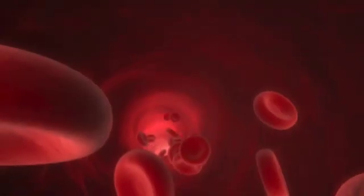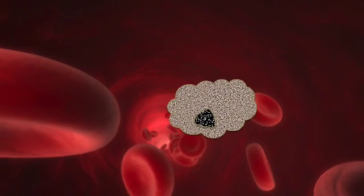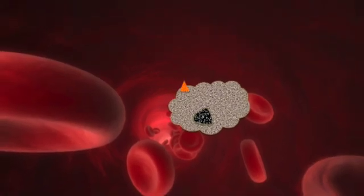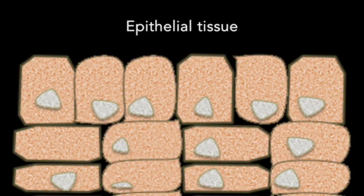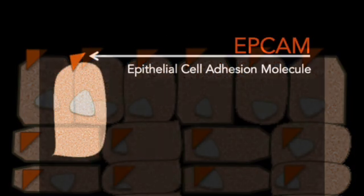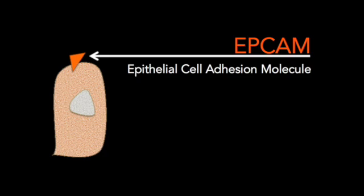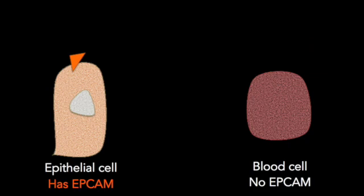How can you find these circulating tumor cells or epithelial cells and how do you identify them? The epithelial tissues have a surface structure called the EPCAM epithelial adhesion molecule which distinguishes them from normal blood cells.